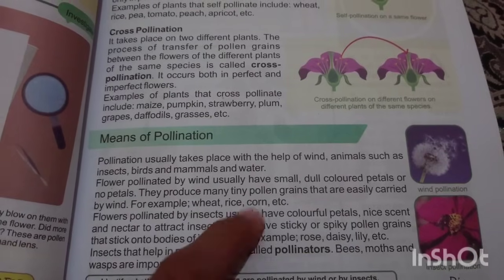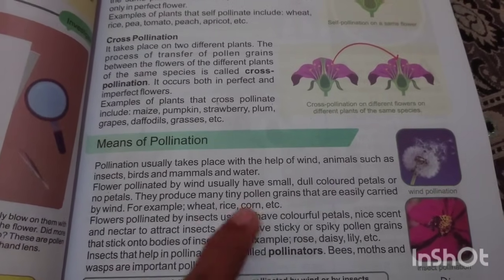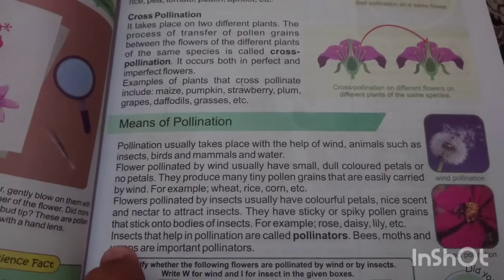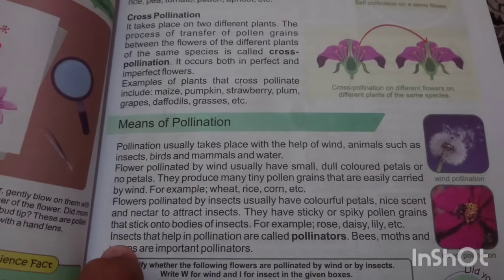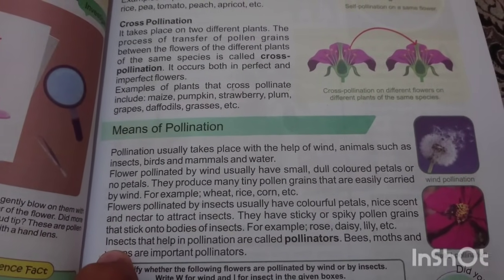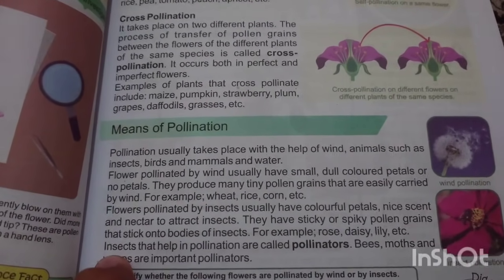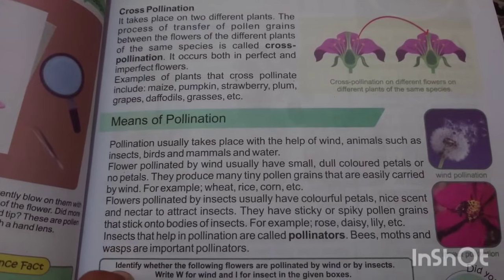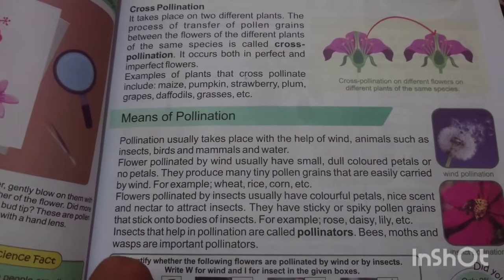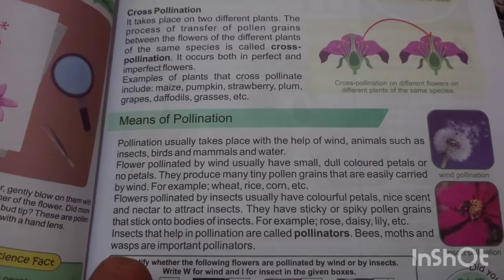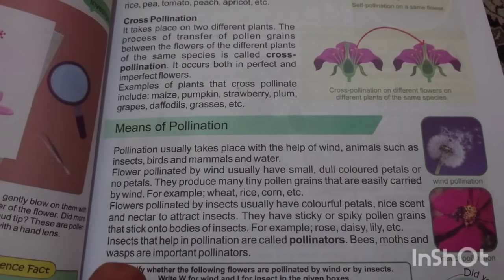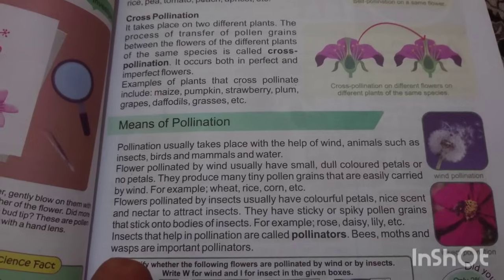For example, wheat, rice, corn, etc. are pollinated by wind. Flowers pollinated by insects usually have colorful petals and a nice scent in order to attract insects. They have sticky pollen grains that stick on the body of insects.